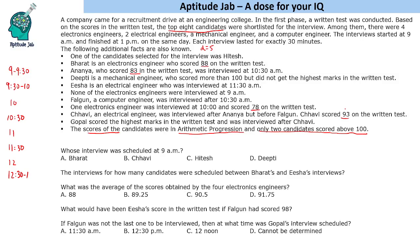Since only 2 candidates scored above 100, the highest possible score is 108. The full sequence is: 108, 103, 98, 93, 88, 83, 78, and 73. These are the scores of all 8 candidates in arithmetic progression with common difference 5.